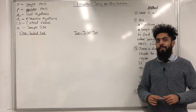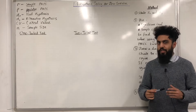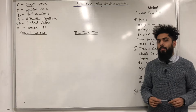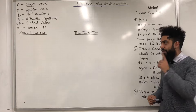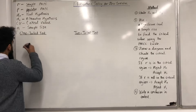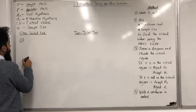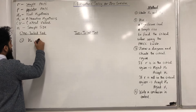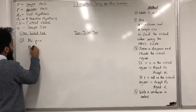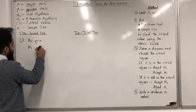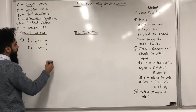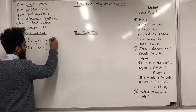In the exam, you can be assessed on a one-tailed test or a two-tailed test. For a one-tailed test, we have two different forms. For the first form, the null hypothesis represents rho is equal to zero, and the alternative hypothesis represents rho is greater than zero. These are the hypotheses for a positive correlation.